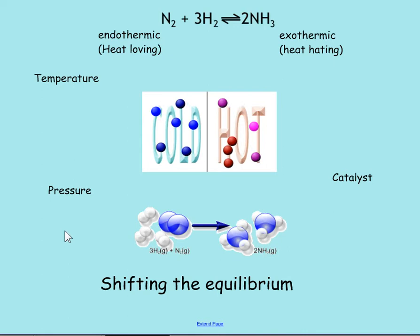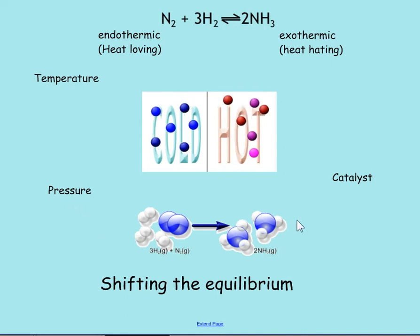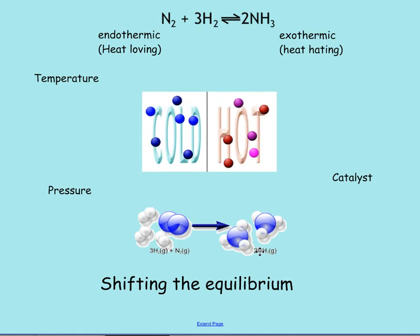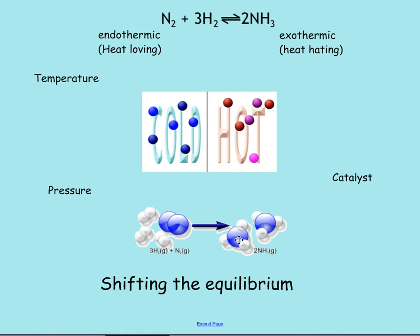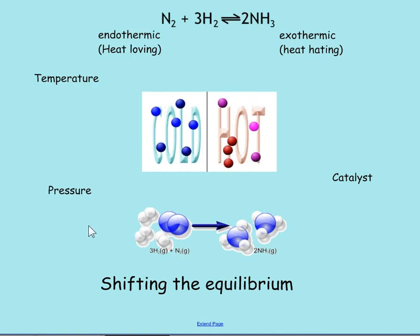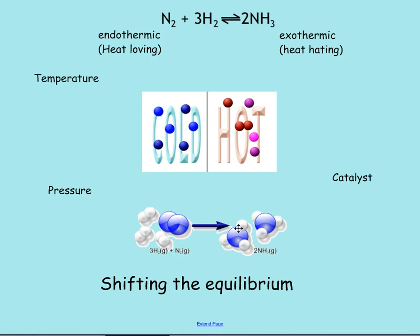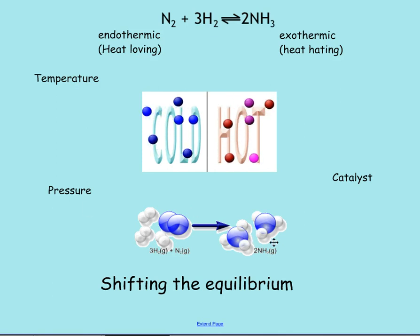The other factor is pressure — we need 200 atmospheres. We increase the pressure and we shift the equilibrium this way. That's because all the particles are closer together and we've only formed two molecules on the ammonia side, whereas on the other side we've got four molecules. So the pressure favours the ammonia side because there are two molecules on this side and four on the other. We whack up the pressure — not too much though, because it's pretty dangerous. So we've got a reasonable pressure that is economical, not dangerous, and it favours ammonia production.